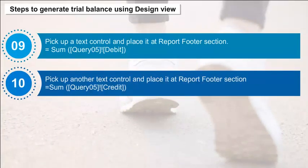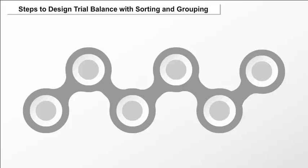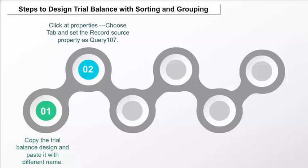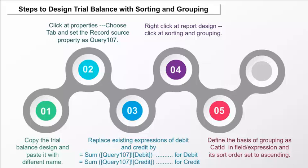Steps to design trial balance with sorting and grouping: Copy the trial balance design and paste it with a different name. Click Properties, choose the tab, and set the record source property as Query 107. Replace existing expressions of debit and credit with the given expressions. Right-click on the report design, click Sorting and Grouping, define the basis of grouping as Cat ID in the field or expression, and set the sort order to ascending. Save the modifications.